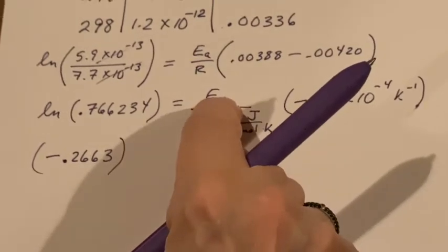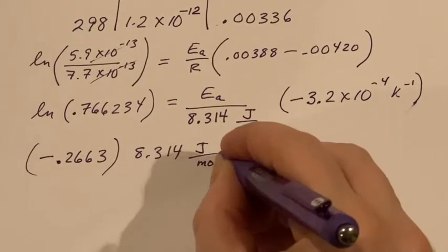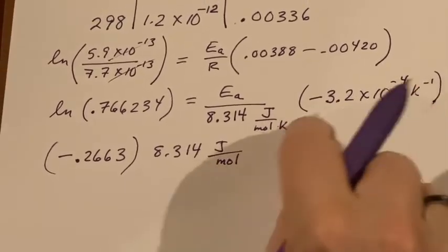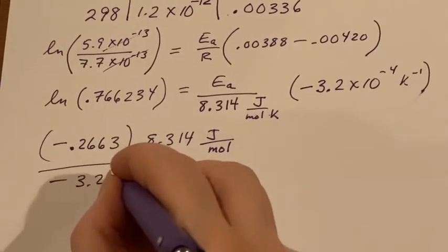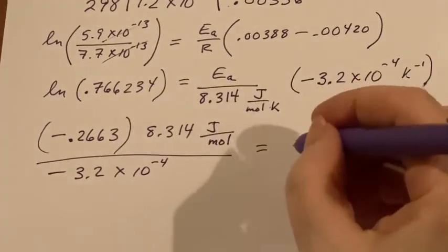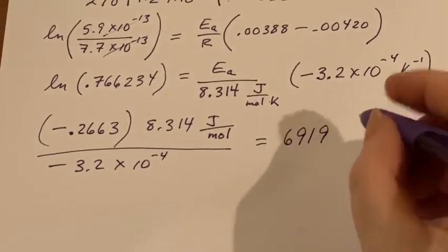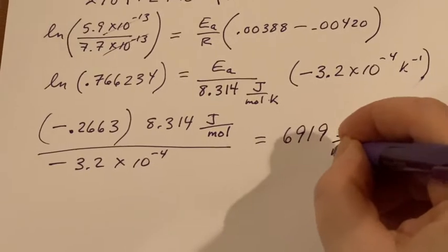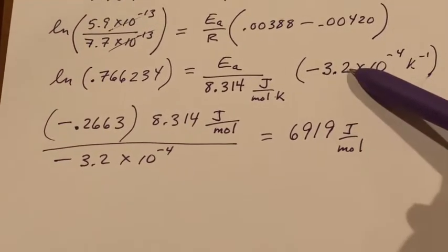This is under two division sides; this would only be under one. So in this case now we can see that the kelvins will cancel out. When I do this logarithm I find out it's a negative number, which is fine by me because I have a negative number over here to deal with.